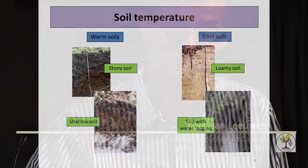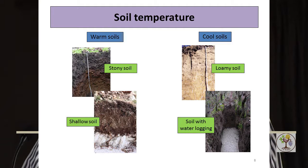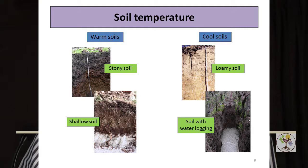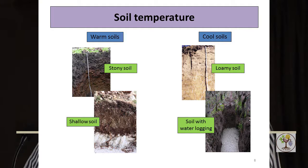Soil temperature also has some importance. You can grow vines either on warm soils — for instance, gravelly soils are warm soils because there is little water in the soil — but also shallow soils are warm soils because what matters is the temperature in the root zone, and in shallow soils the roots are close to the surface. So we can consider stony soils and shallow soils as warm soils. On the other hand, deep loamy soils are cool soils, or soils with problems with waterlogging.